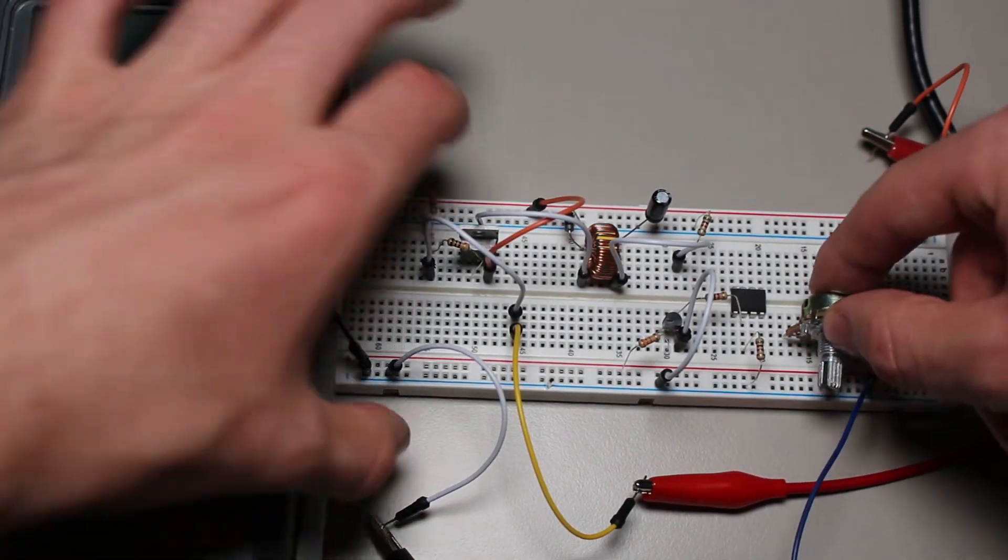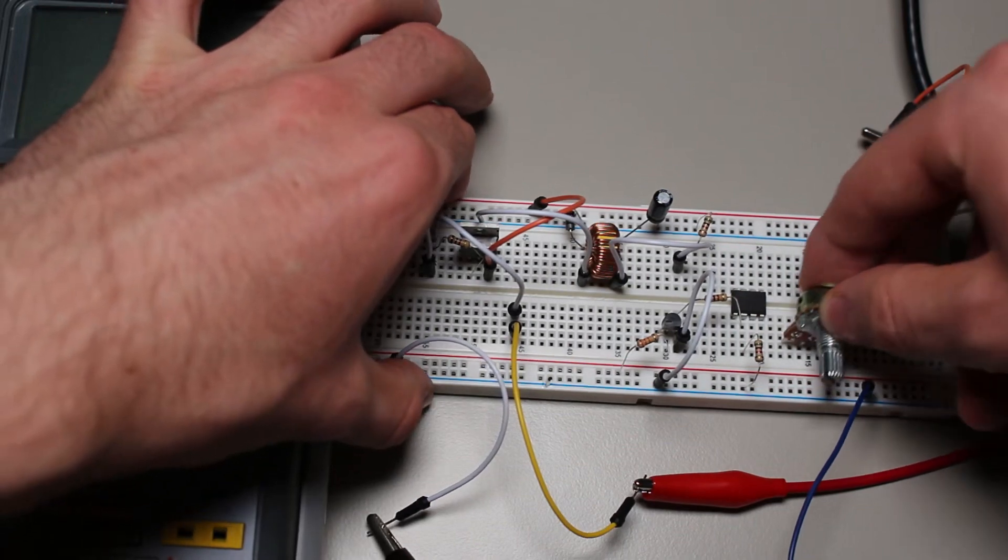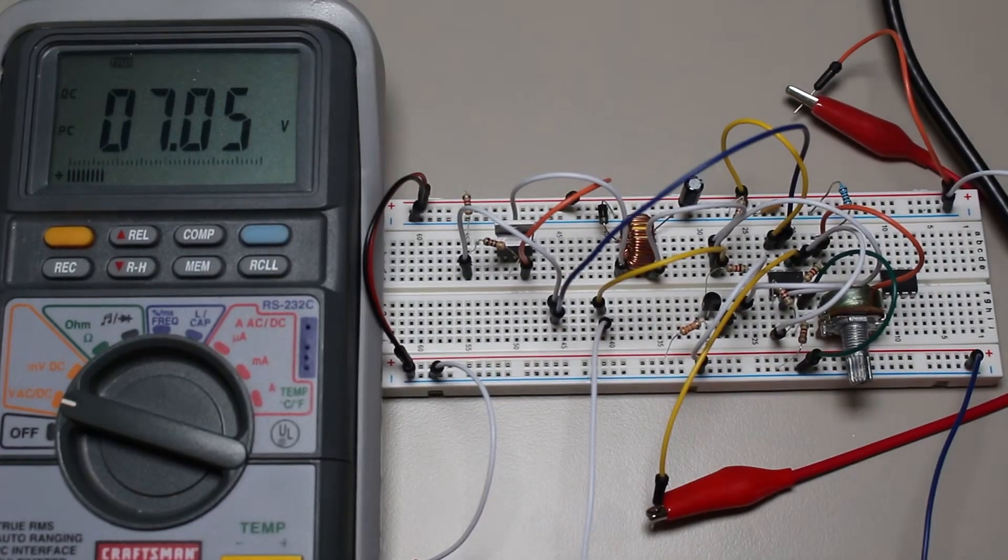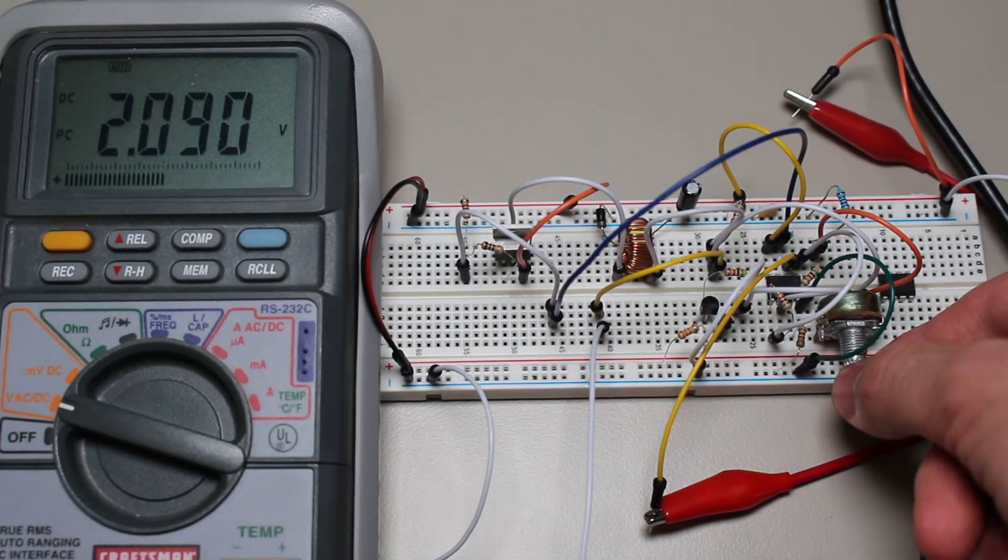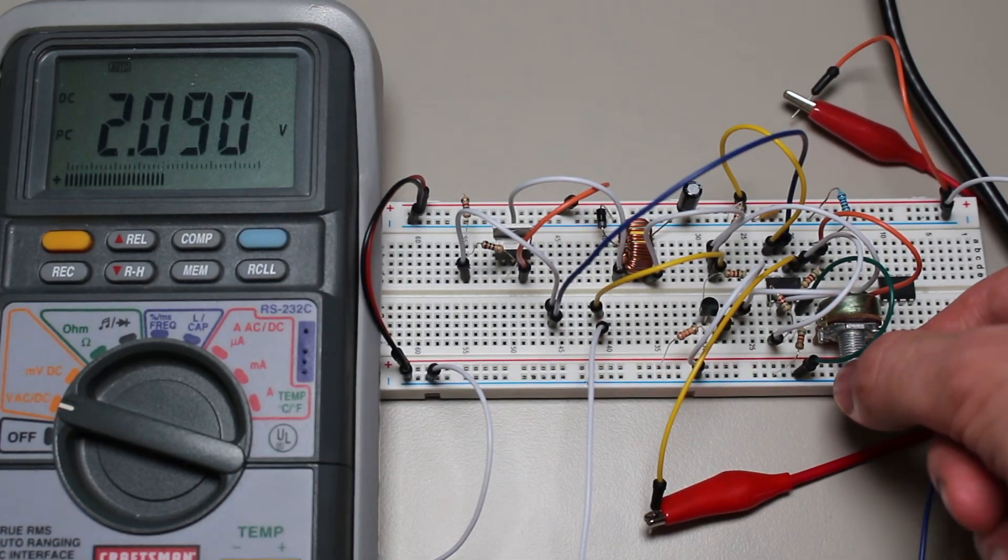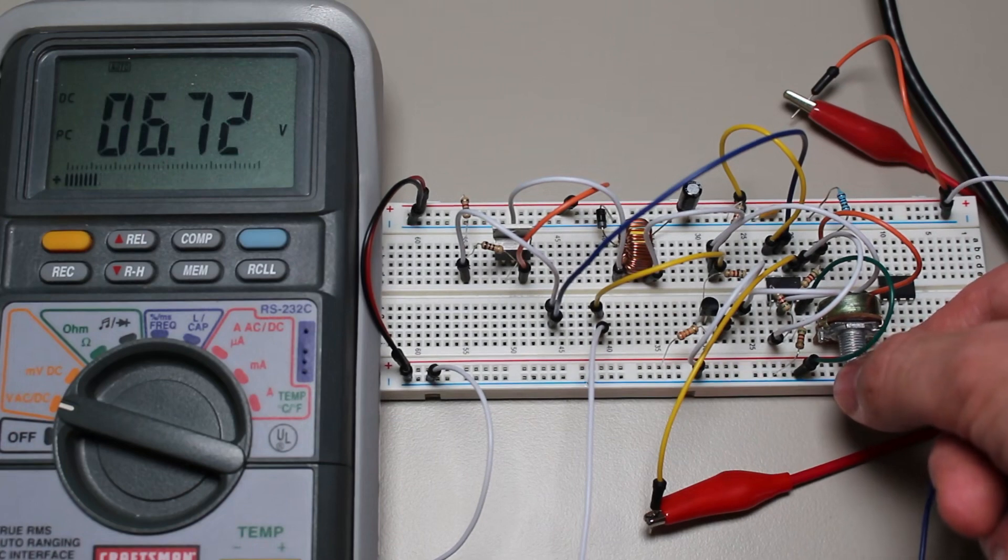We can then take the error voltage and put it into the non-inverting input of a comparator. The inverting input is then connected to the 1.3 volt ramp oscillator, meaning that the higher the error, the higher the duty cycle will be. At first I used my function generator to test the ramp oscillator and the circuit worked as expected.